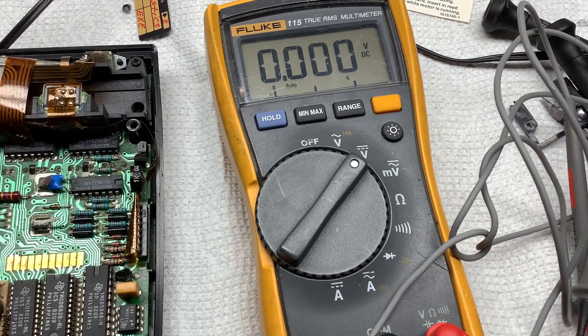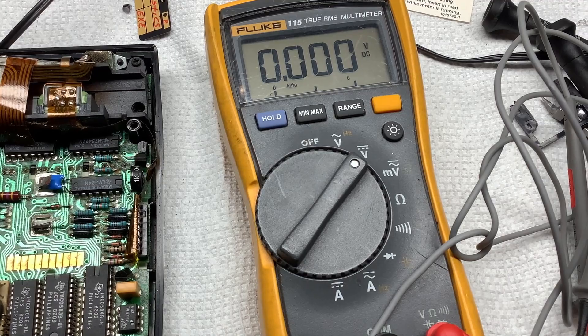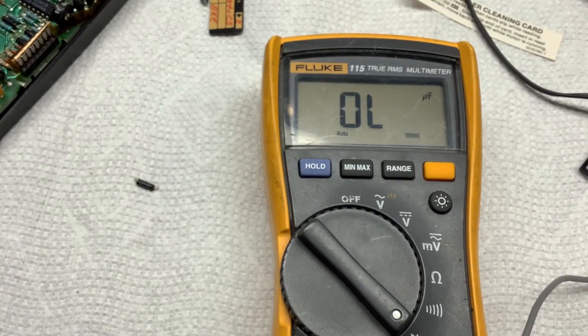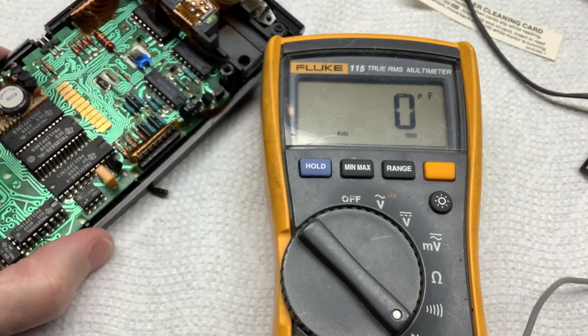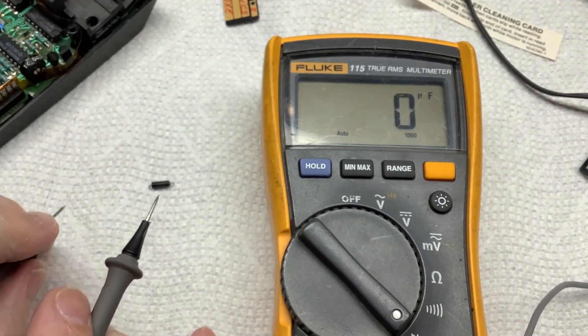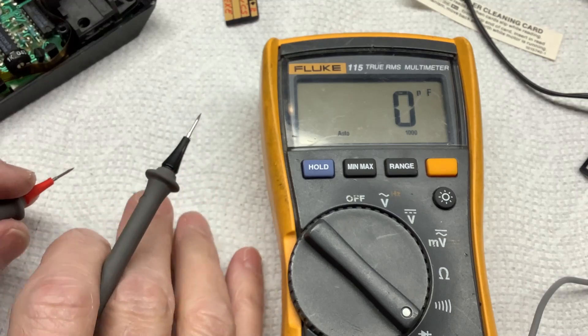Anyway, there we go. I was talking about how the caps in this 59 go bad, the tantalum caps. And so I've clipped this one out real quick so I can measure it and show you what I'm talking about.